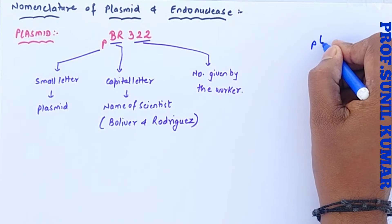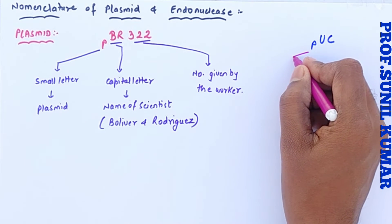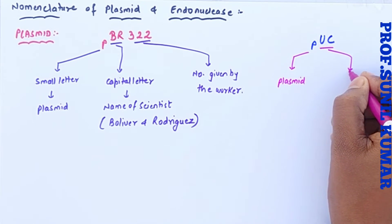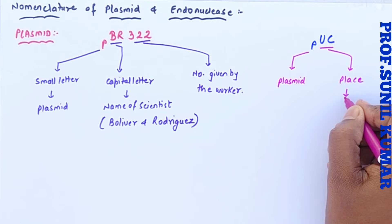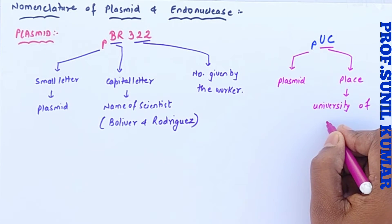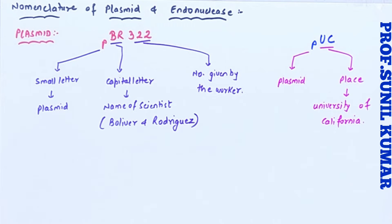Another example is pUC — it is not 'pollution under control'! Again 'p' is a small letter indicating plasmid. 'U' and 'C' are capital letters indicating the place where it has been discovered — that is the University of California. So to summarize: the first letter is always small 'p' for plasmid, and the next two alphabets can be the name of the scientist or the place where it was discovered.